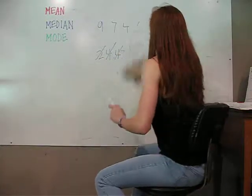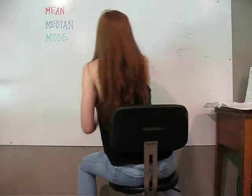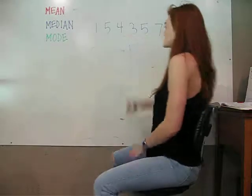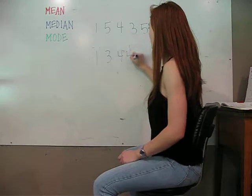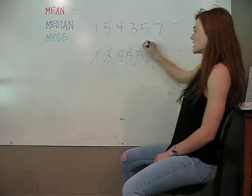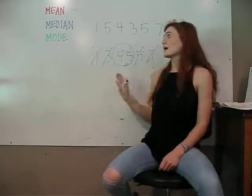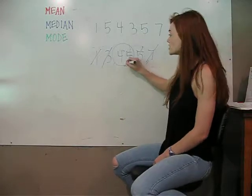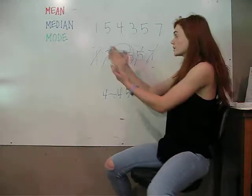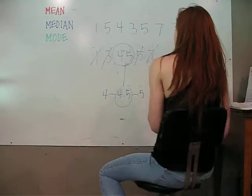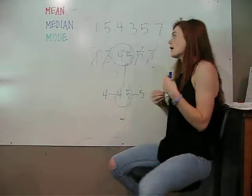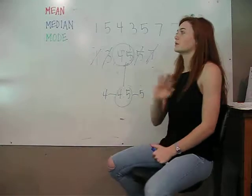If you have an even amount of numbers in your data set, we'll do six. Put them in order: 1, 3, 4, 5, 5, 7. Once they're in order you slash, slash, slash, slash, and then you have two numbers left. They are not both your median — you find the middle of these two numbers. So the middle of 4 and 5 would be 4.5, because that is in between 4 and 5. So your median is 4.5. Whether these numbers were 19 and 36, you'd have to find the middle. There will never be two medians.